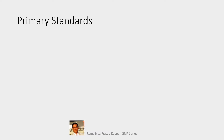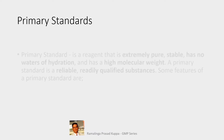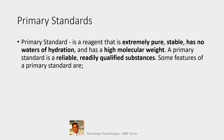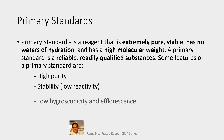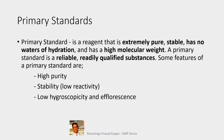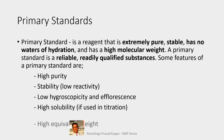Let us understand what a primary standard is. A primary standard is a reagent that is extremely pure, stable, has no water of hydration, and has a high molecular weight. It is a reliable, readily qualified substance. Key features include high purity, stability (low reactivity), low hygroscopicity and efflorescence, high solubility for use in titration, and high equivalent weight.